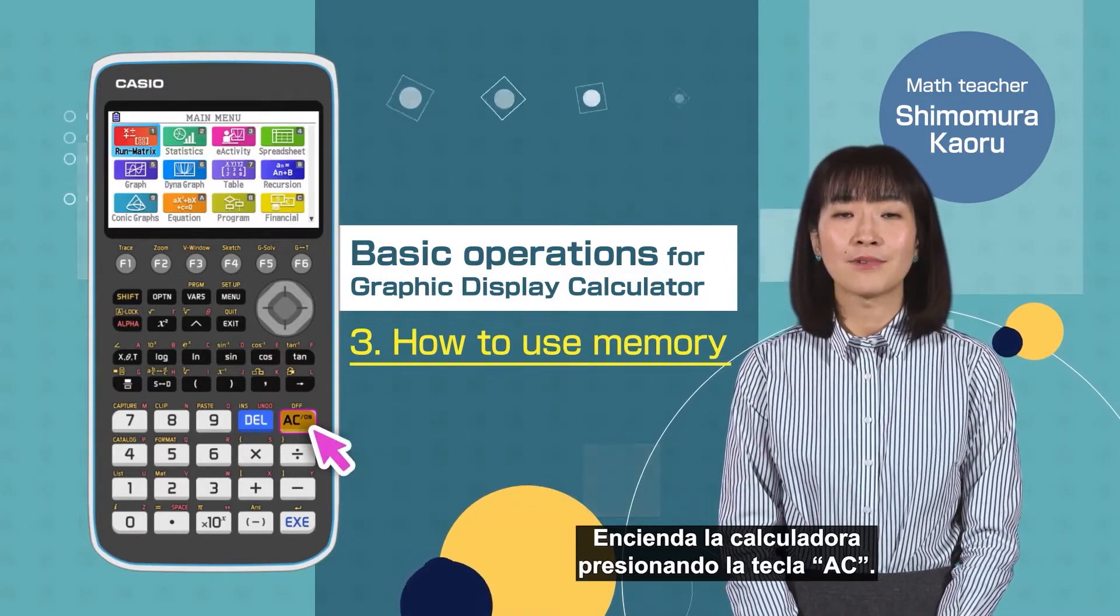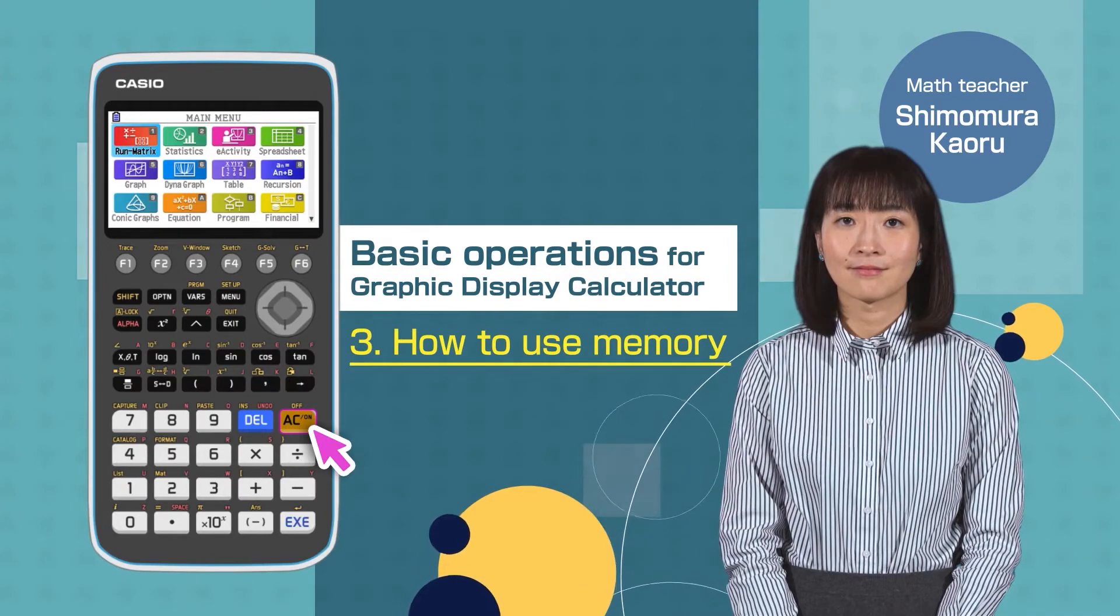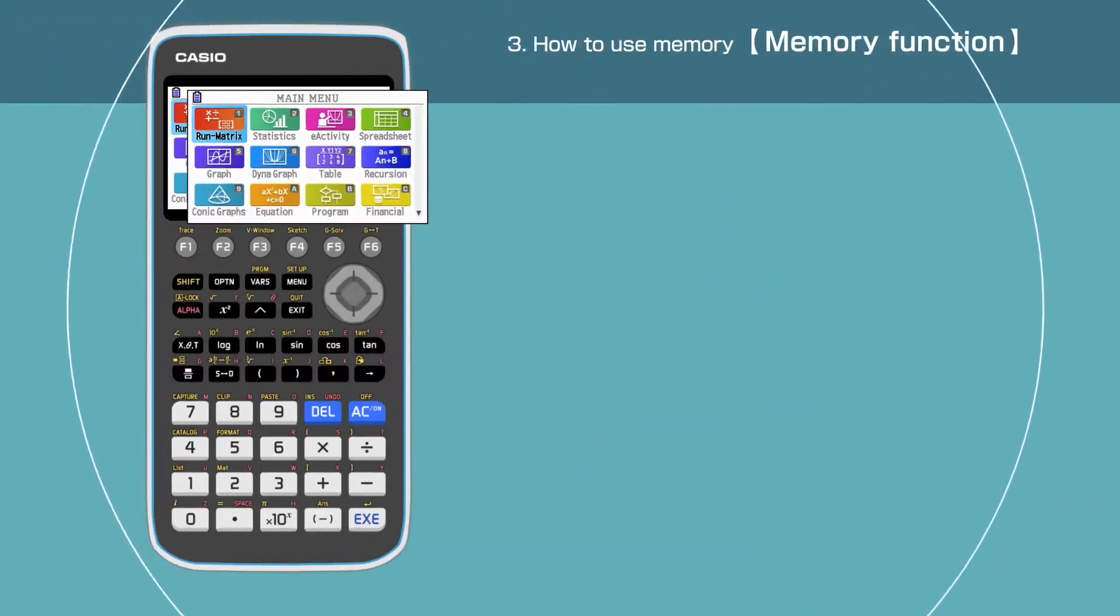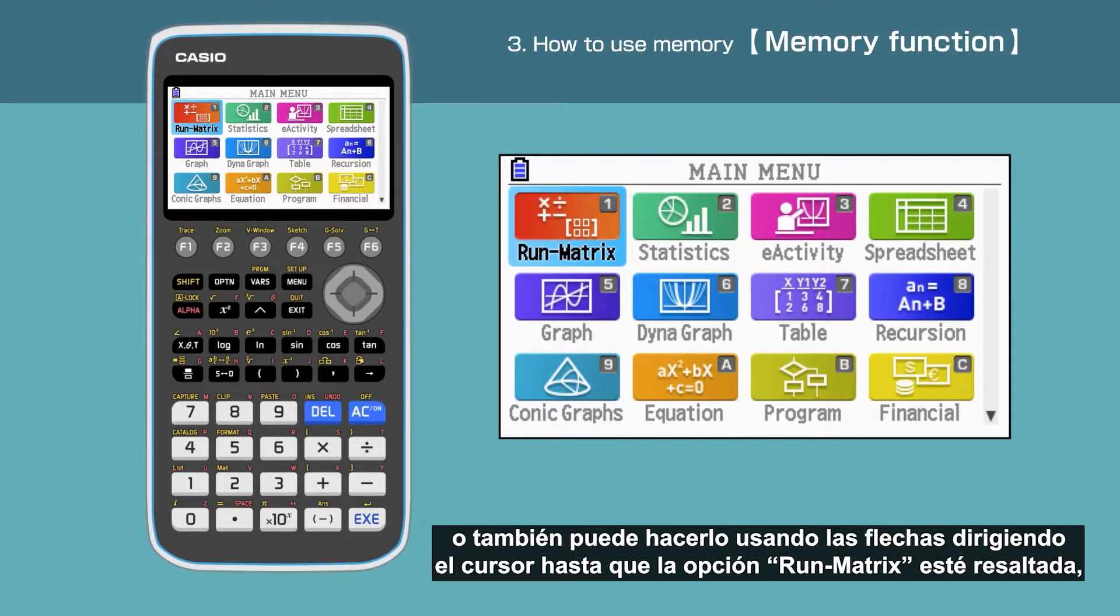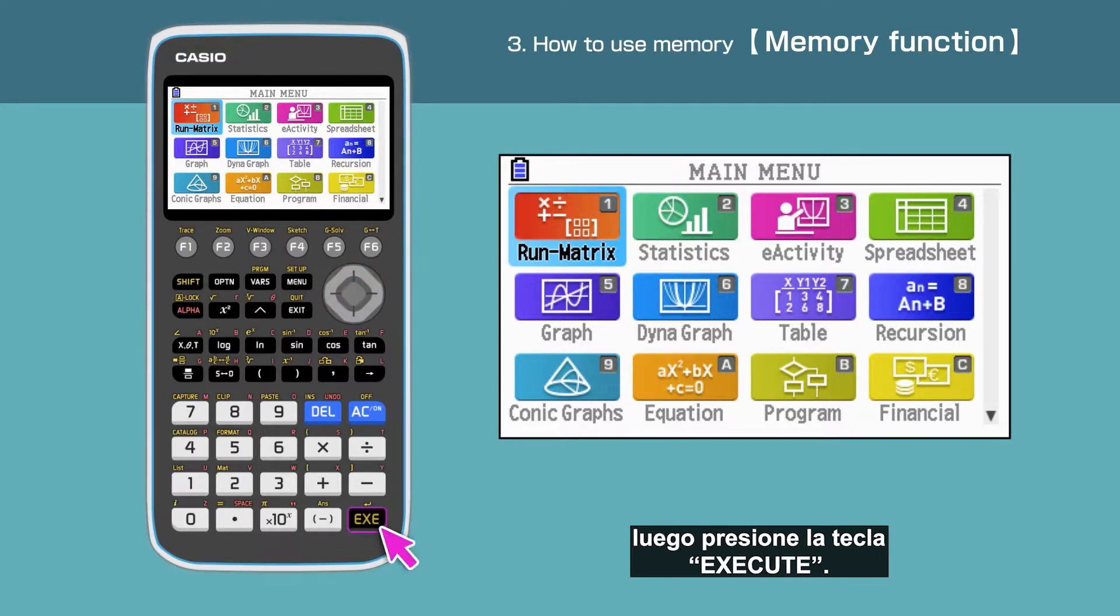Switch on your calculator pressing AC button. Press the menu button to open the main menu. Press 1 to enter the Run Matrix menu, or move the cursor and highlight 1, Run Matrix, then press Execute.